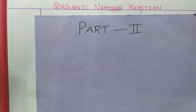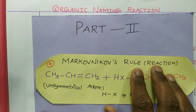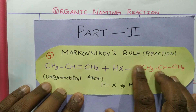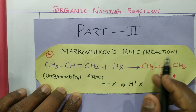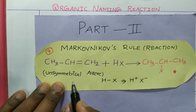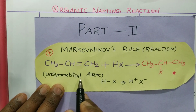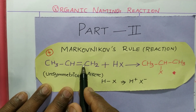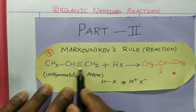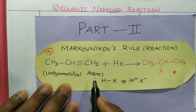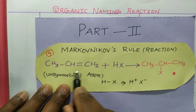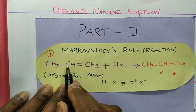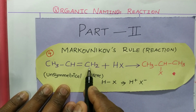The first one is the Markovnikov rule. This is applicable only for unsymmetrical alkenes. Alkenes are double-bonded carbon-containing hydrocarbons. Unsymmetrical means that on the left side of the double bond you have two carbon atoms, and on the right side you have only one carbon atom.